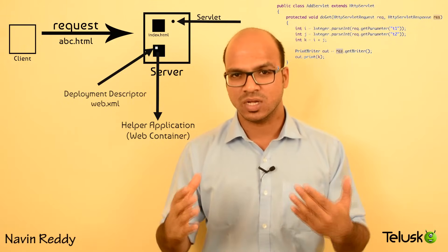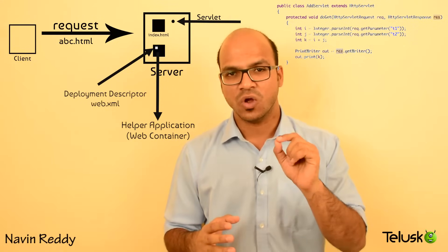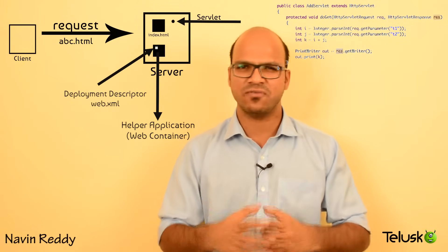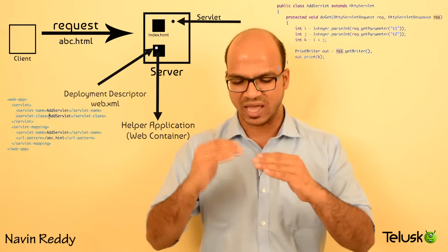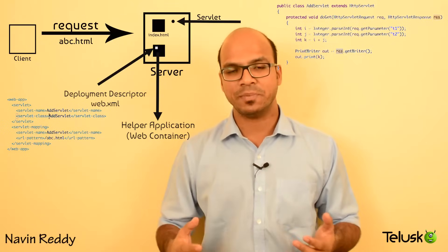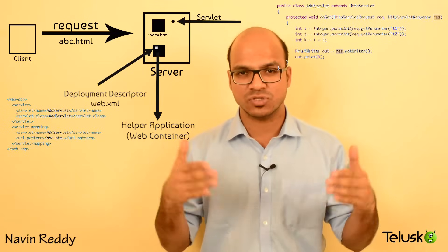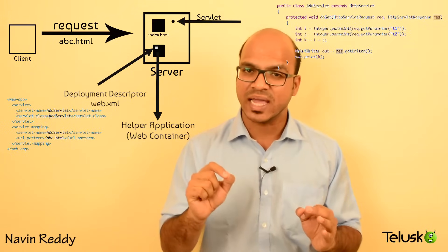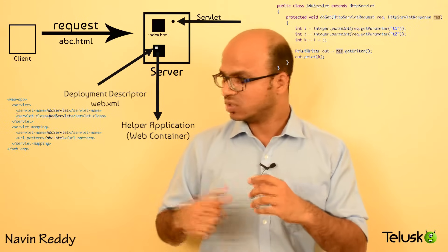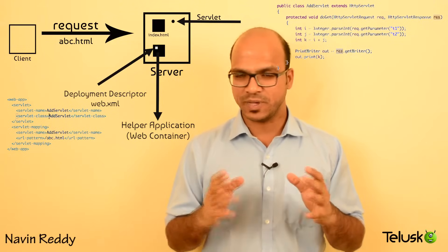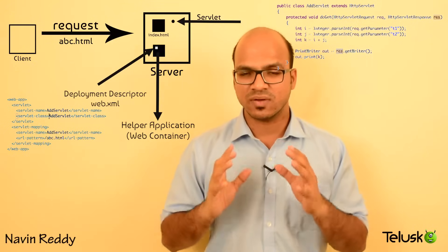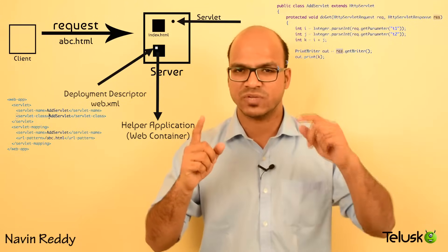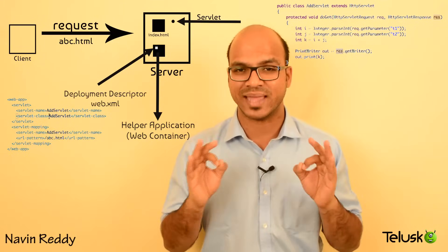Inside your container there is a special file called the deployment descriptor. In this file you mention which request maps to which servlet. In your Tomcat server you may have 50 to 60 servlets, and every request is mapped to one servlet — though multiple requests can map to the same servlet. This is all configured in the deployment descriptor file named web.xml.